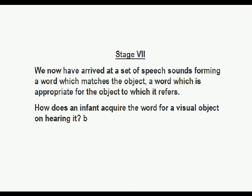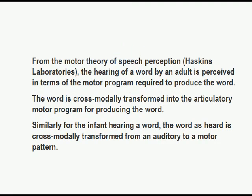So we come to stage seven. We have now arrived at a set of speech sounds forming a word which matches the object — a word which is appropriate for the object to which it refers. How does an infant acquire the word for a visual object on hearing it? From the motor theory of speech perception developed at the Haskins Speech Laboratories, the hearing of a word by an adult is perceived in terms of the motor program required to produce the word — the word is cross-modally transformed into the articulatory motor program for producing it.